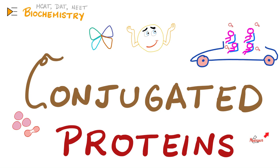Hey guys, it's Medicosis Perfectionelis, where medicine makes perfect sense. Let's continue our biochemistry playlist. In the last videos, we talked about the titration of amino acids, the peptide bonds, the primary, secondary, tertiary, and quaternary protein structure. And today we shall talk about conjugated protein, which is protein plus something else.